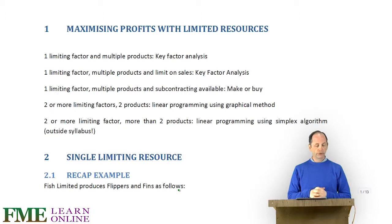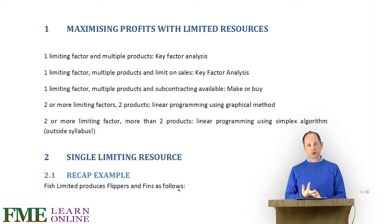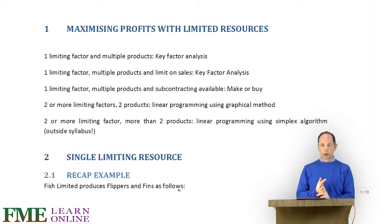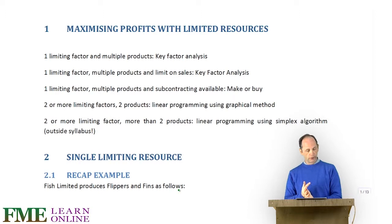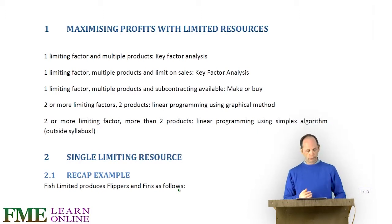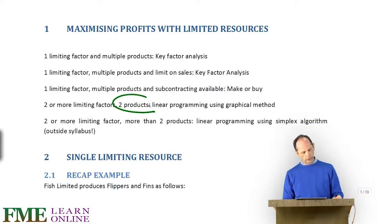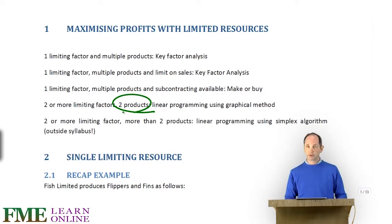If there are two or more limiting factors — so we've got material, labour, and machine hours all restricted — and only two products, then we can do linear programming using a graphical method, using a little graph. So we need a ruler. If you haven't got a ruler, stop the video now and go and get one — it's going to help.